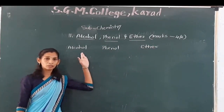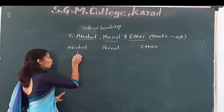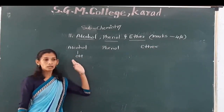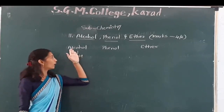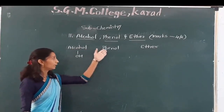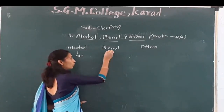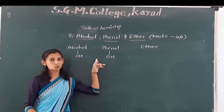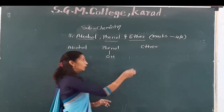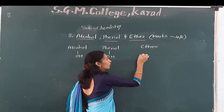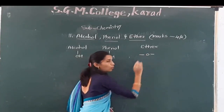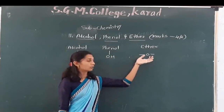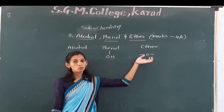In case of alcohol, the functional group OH is attached to an alkyl compound — these are known as alcohol. In case of phenol, the same functional group OH is attached. And in case of ether, two alkyl groups are attached to that oxygen.